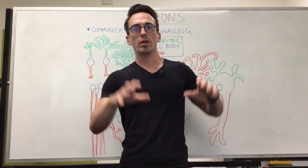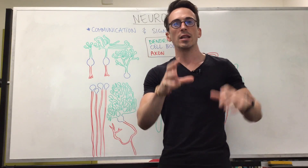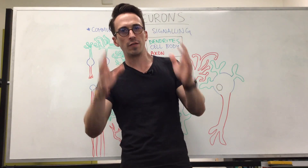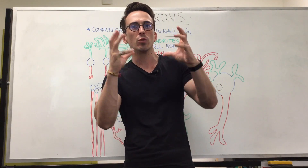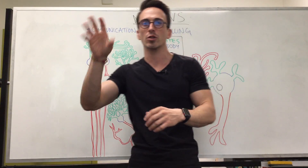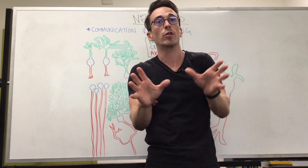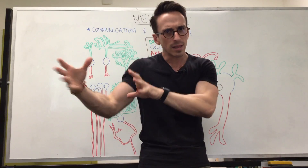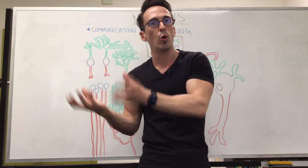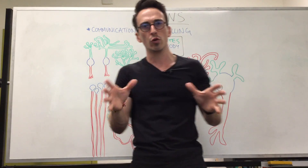Hi everyone, Dr. Mike here. When we look at the nervous system and the cells of the nervous system, there are two types: neurons and glia. Neurons are going to be the focus of this video. The other cell type is glia, which is Greek for glue — these are the supporting cells of the nervous system and will be the focus of their own video. So let's have a look at neurons.